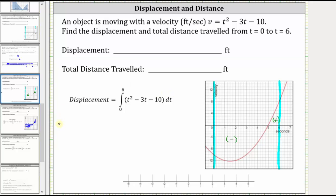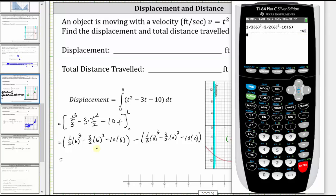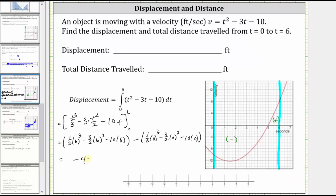Let's find the antiderivative. The antiderivative of t squared is t cubed divided by three, minus the antiderivative of 3t which is three times t squared divided by two, minus the antiderivative of 10, which is 10t. We need F(6) minus F(0): one-third times six cubed, minus three-halves times six squared, minus 10 times six, minus the quantity one-third times zero cubed minus three-halves times zero squared minus 10 times zero. F(6) equals negative 42 and F(0) equals zero, so the displacement is negative 42.